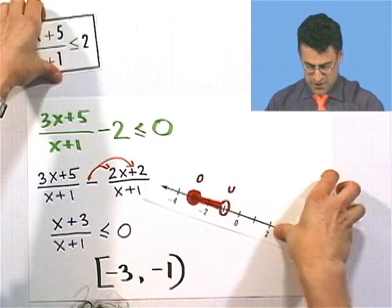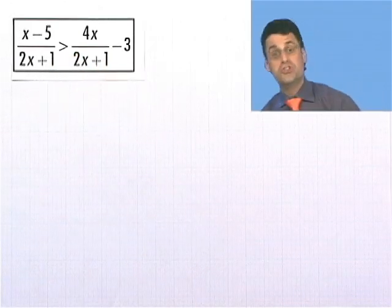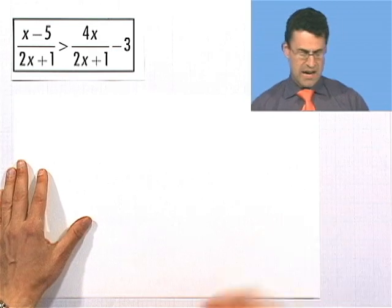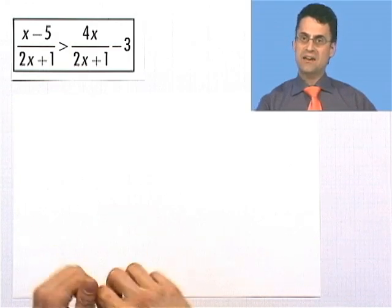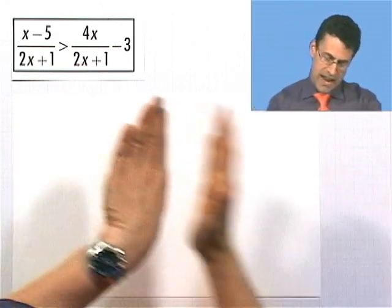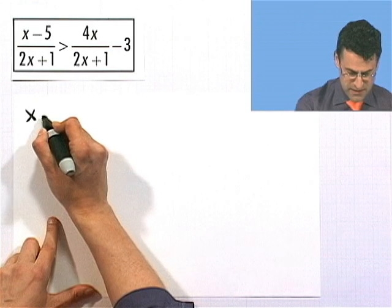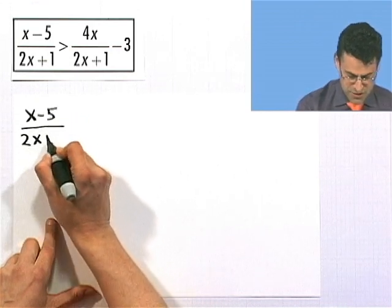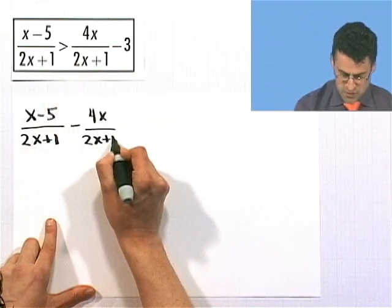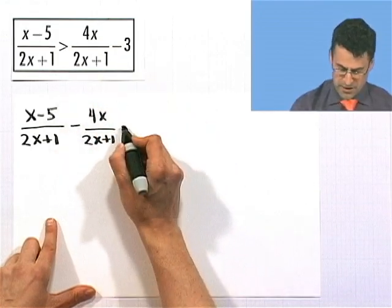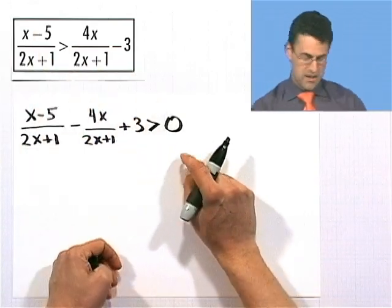Let's try one more together — I know these are challenging but doable. You can do it. There's lots of action going on here, but you know exactly what to do: get one rational expression on the left and 0 on the other side. So bring everybody over to the left-hand side. Subtract 4x over 2x plus 1, and subtract the negative 3, which is adding 3 to both sides. The sign remains greater than, and now it's greater than 0.